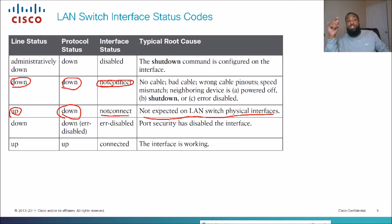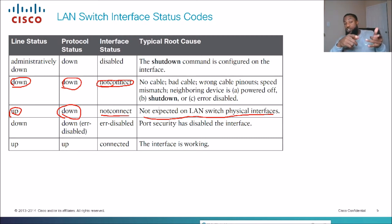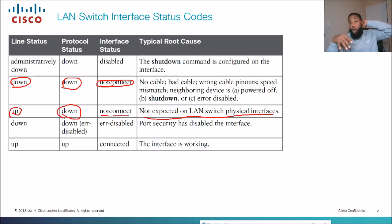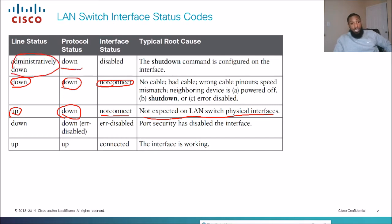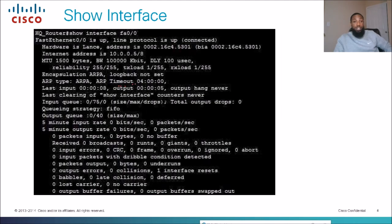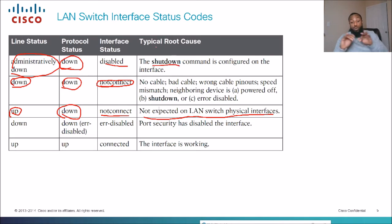You'll see speed mismatches causing this combination as well. In the hands-on video I'll change the speeds and show what happens — it's going to show down/down. The next device could also be powered off, have the shutdown command on it, or be err-disabled. If layer one is administratively down and protocol status is down, it will say disabled — that lets us know we manually shut down this port.